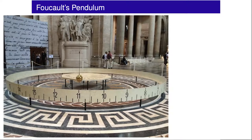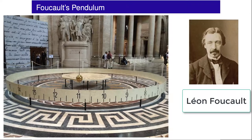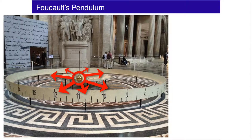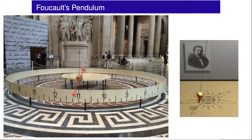Foucault's pendulum is a simple experiment conceived by Léon Foucault to demonstrate Earth's rotation. It consists of a large pendulum whose pivot is able to swivel, such that the plane of oscillation is uncoupled from Earth, leaving it free to rotate relative to Earth. The plane of oscillation of the heavy pendulum remains fixed in space while Earth rotates underneath it, meaning that we, in Earth's rotating frame of reference, see the pendulum as rotating.